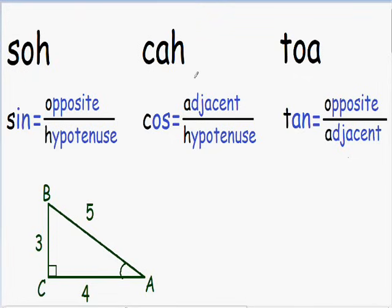You can see the pattern by now. You can do the same thing for the word TOA. The T stands for tangent, the O stands for opposite, and the A stands for adjacent. So tangent is equal to opposite over adjacent.